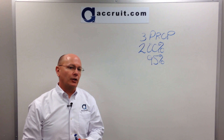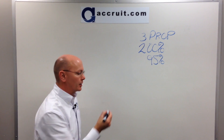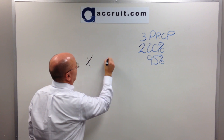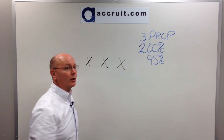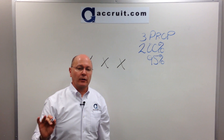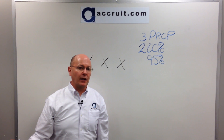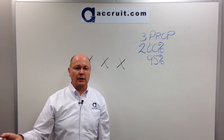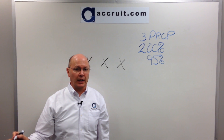So if you send in your identification list to your intermediary and you keep the list at three properties or less, there is no regard to fair market value. Each property could be worth $10 trillion — it doesn't matter to the IRS.